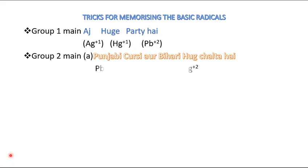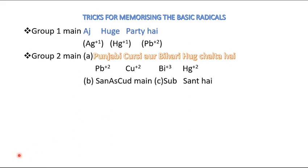When we talk about Group 2, I have created a clue from the first letters of words. Group 2 has subgroups: the first section is remembered as 'Punjabi, Kursi, and Bihari are going to be a hug.' The second section is the B and C section.